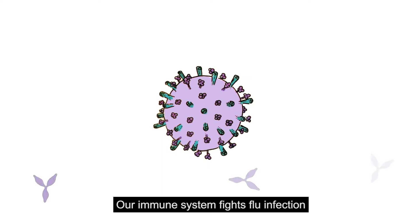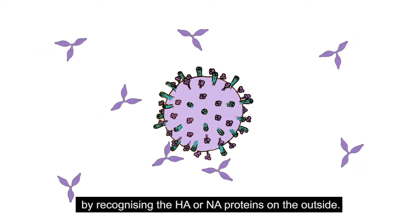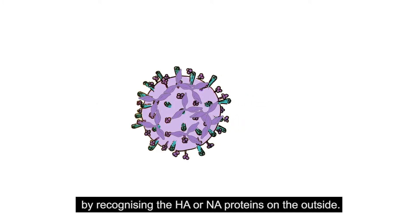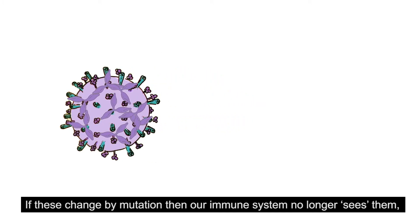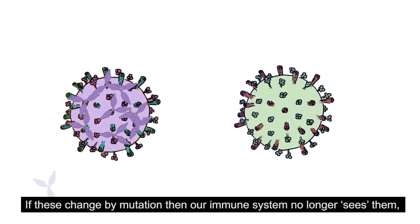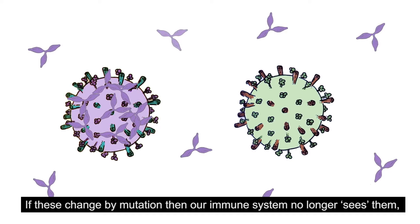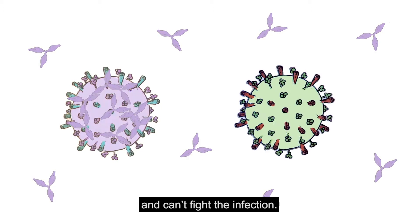Our immune system fights flu infection by recognising the HA or NA proteins on the outside. If these change by mutation, then our immune system no longer sees them and can't fight the infection.